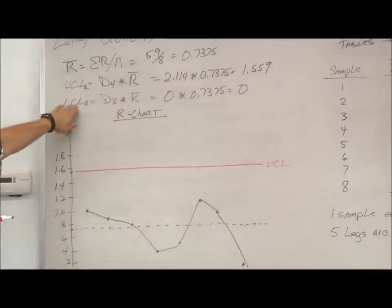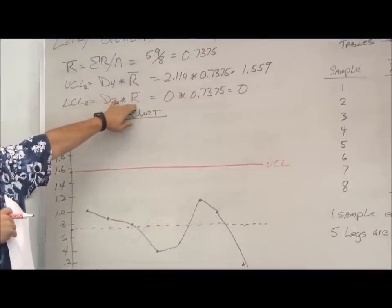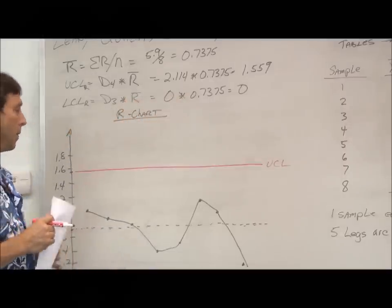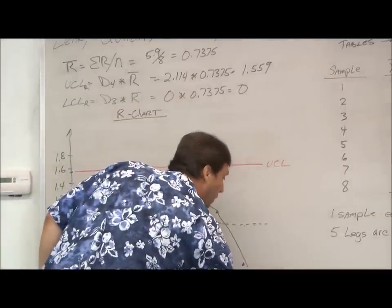My lower control limit, we know D3 was zero, and R average, or R bar, so anything times zero is zero. So this is my lower control limit.